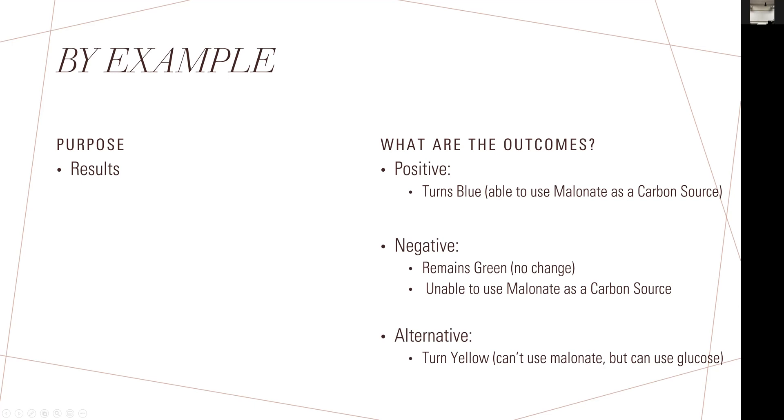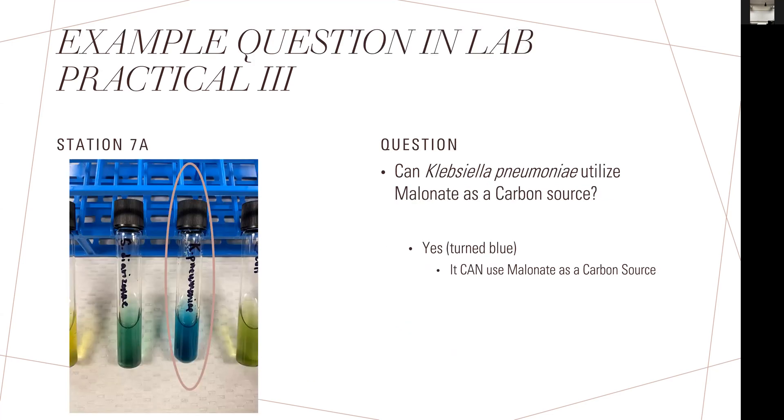This is the entire breakdown of the pre-lab: your purpose, your materials and methods, and the types of results. Now, how does this translate into an exam? I want to give you actual examples we've used in previous exams. When we had our stations, you would see certain tubes of the medium. For example, this is also part of the malonate test. We want to tell you what it is, but you'd be able to identify it on your own.